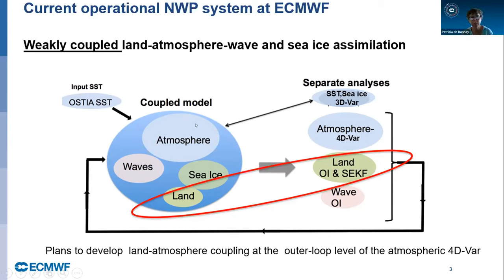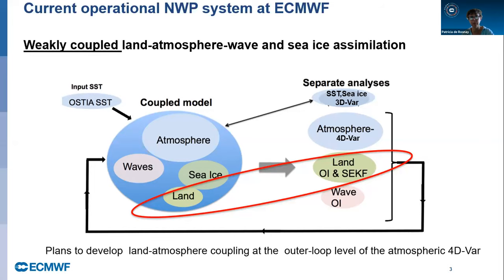The output of the data assimilation provides the initial conditions for the next assimilation window, for the first guess for the next assimilation window. This is a weak coupling, but we have plans to develop land-atmosphere coupling at the outer loop level of the atmosphere 4D-Var. We are looking at different approaches in terms of coupling methodology.